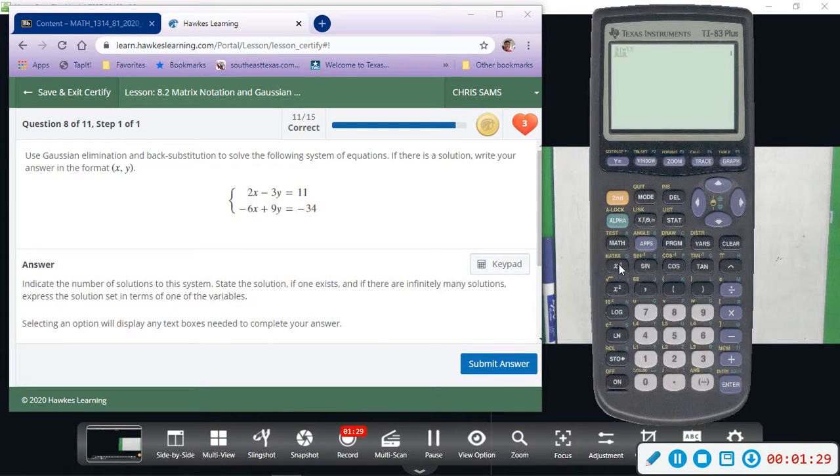And then we're going to go second matrix again, arrow to the middle for math, and we're going to arrow up to RREF, reduce row echelon. Then we're going to do second matrix one more time, enter on A, and then enter again.